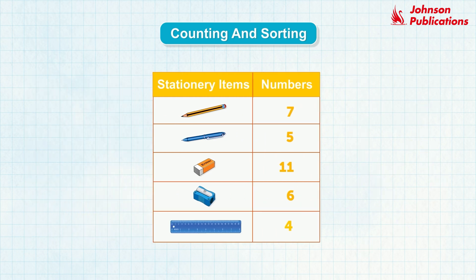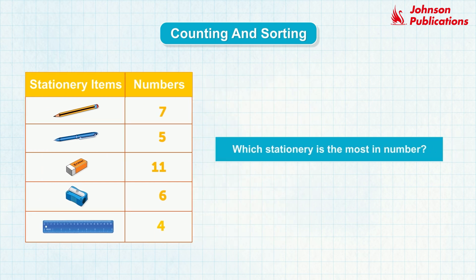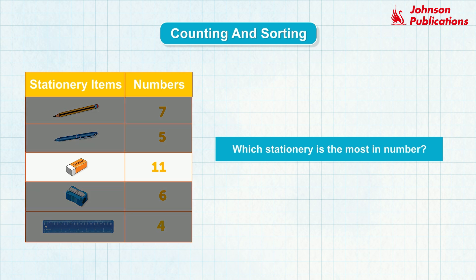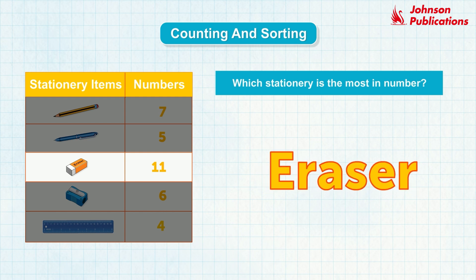Observe the table and let us answer some questions now. Which stationary item is the most in number? We counted 11 erasers, which are the most in number. So the answer is erasers.